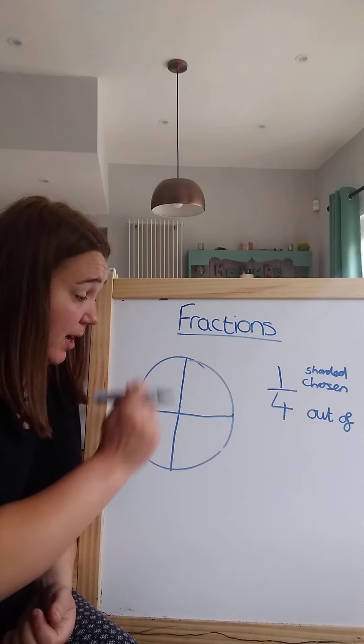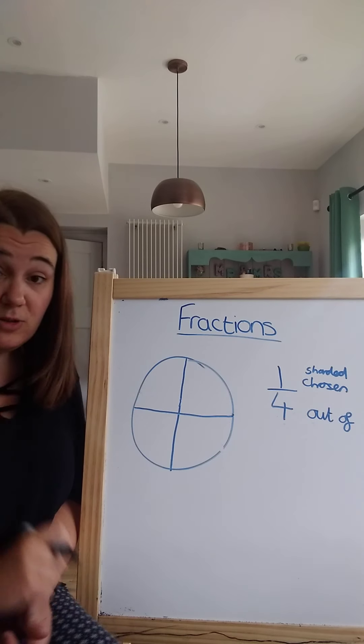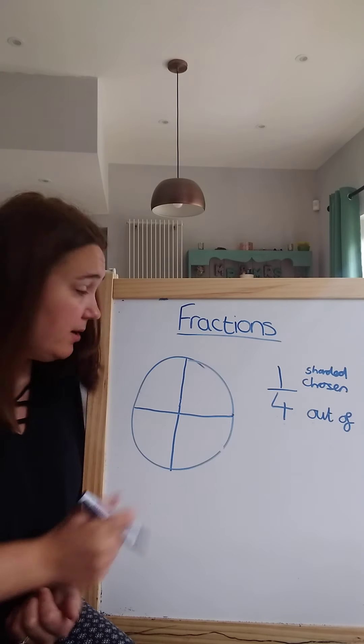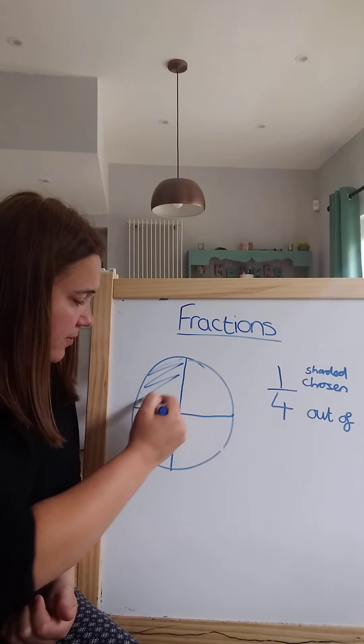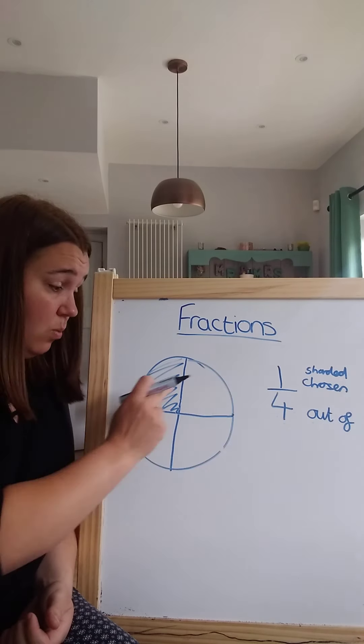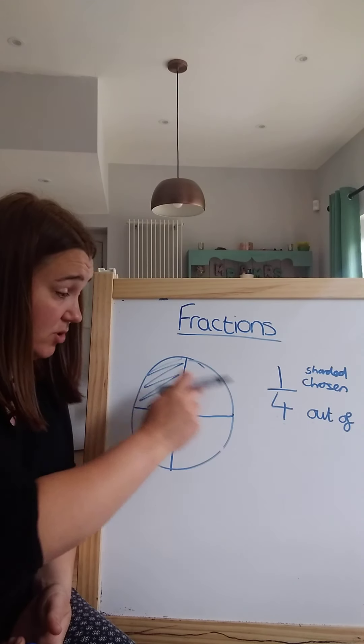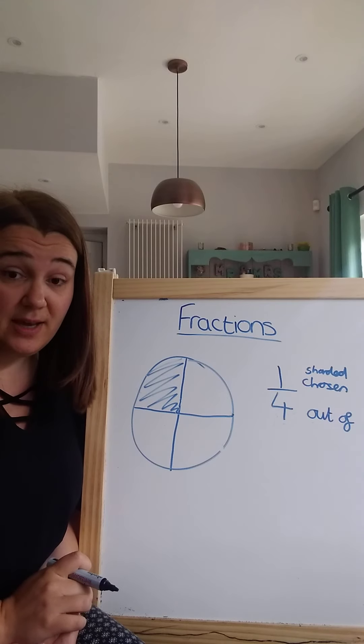Okay, that's a little better. Okay, so I've got four parts, one, two, three, four. One of those parts is shaded, is chosen. So that is showing one quarter. One, it's saying one out of those four pieces are shaded.